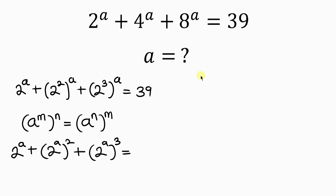The perfect cube we're going to be using for 39 is 27, which is a perfect cube, plus a perfect square: 9, which is a perfect square. So 27 plus 9 is 36, and the remaining number is 3. That is it.